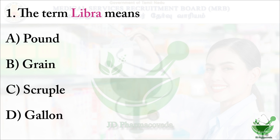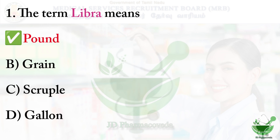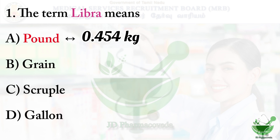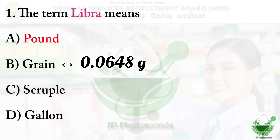Question number one: the term 'Libra' means — option A: pound, option B: grain, option C: scruple, option D: gallon. The correct option is option A, pound. One pound is equal to 0.454 kilogram. One grain is equal to 0.0648 gram.